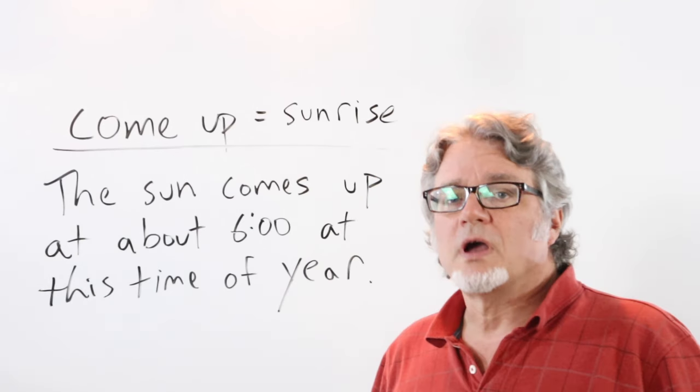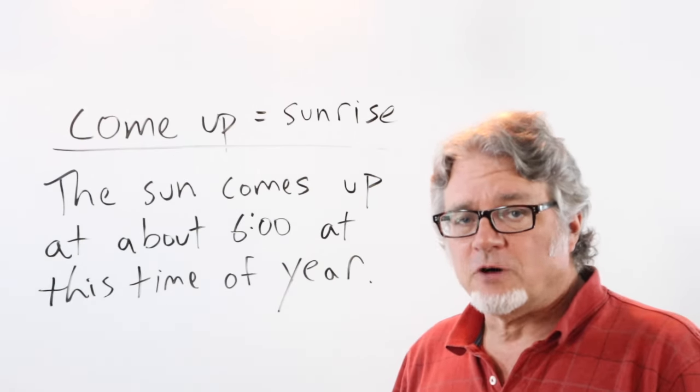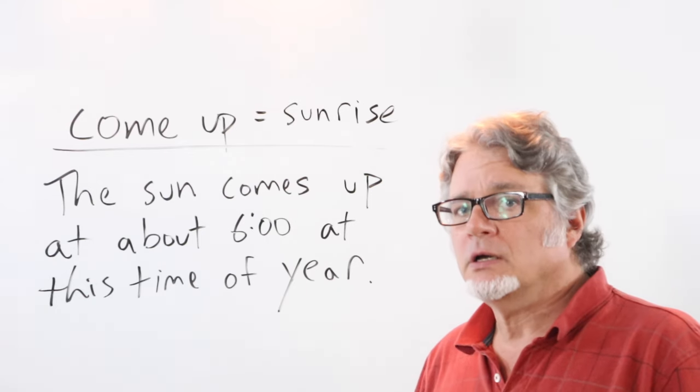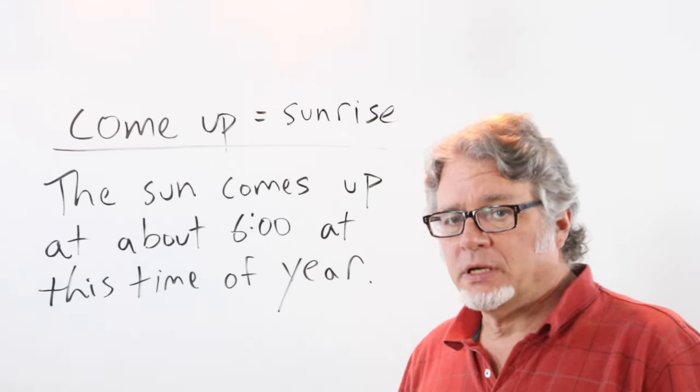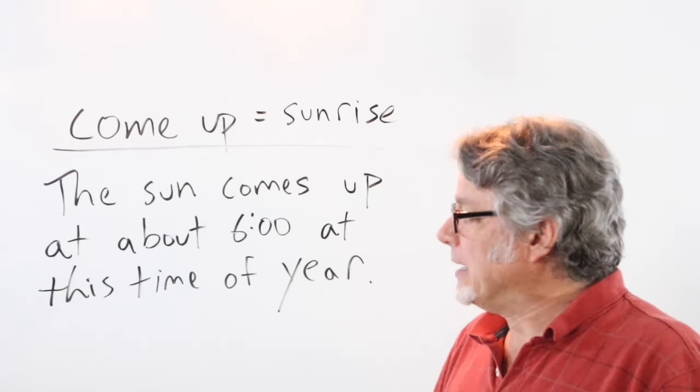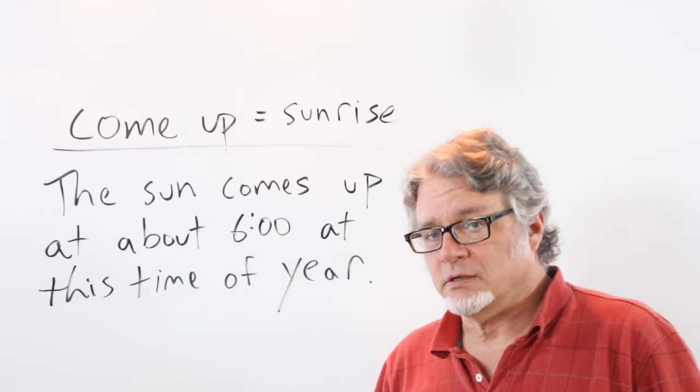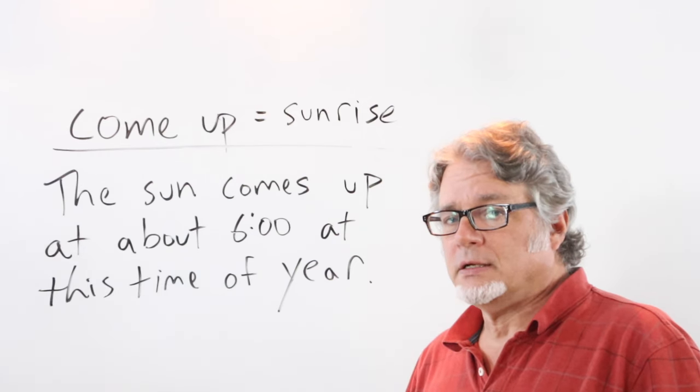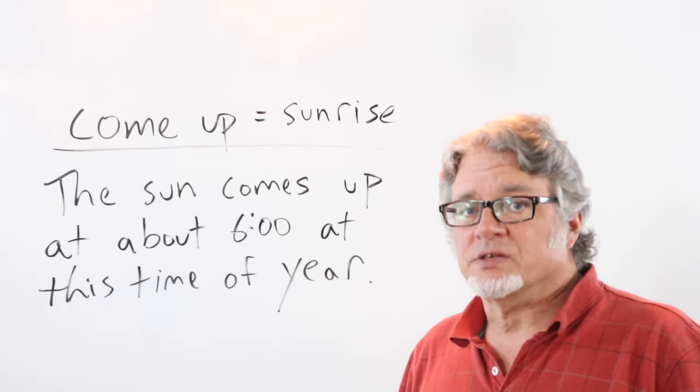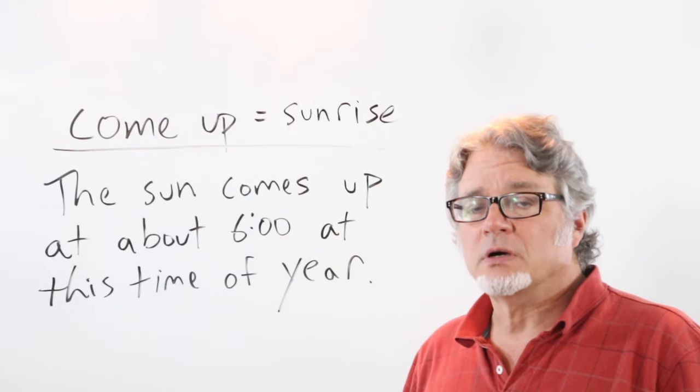We use come up for the sunrise. When the sun rises in the morning, we use come up. The sun comes up at about six o'clock at this time of year. In the winter, it comes up late. In the summer, it comes up early. Now the sun is coming up later and later as we get closer to the fall.